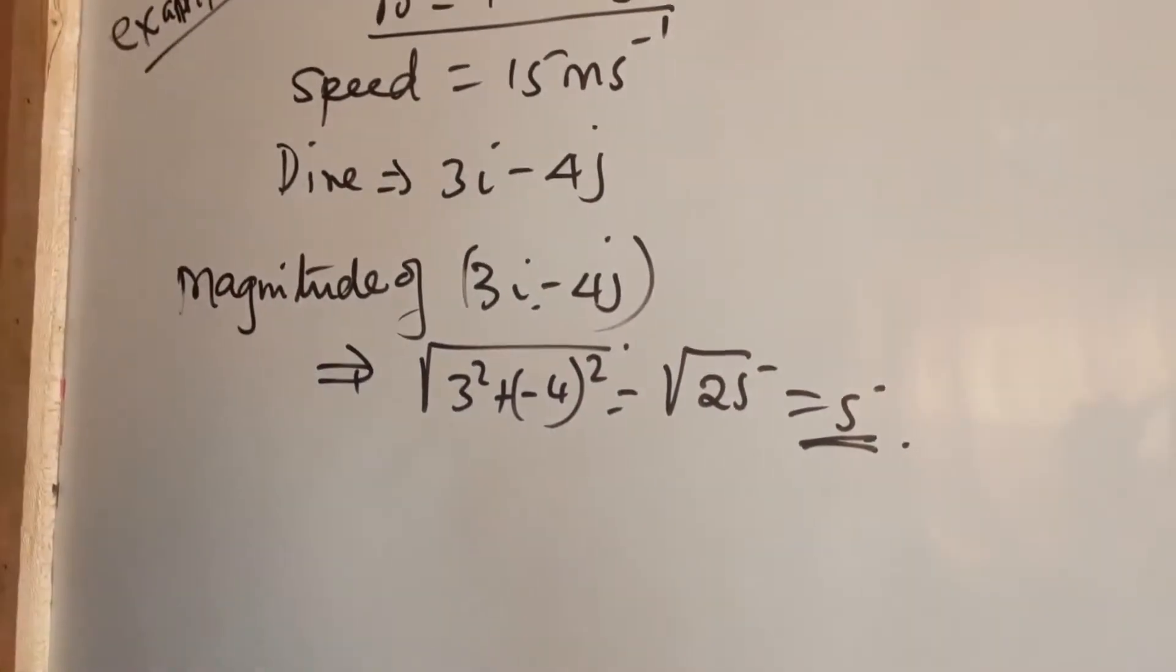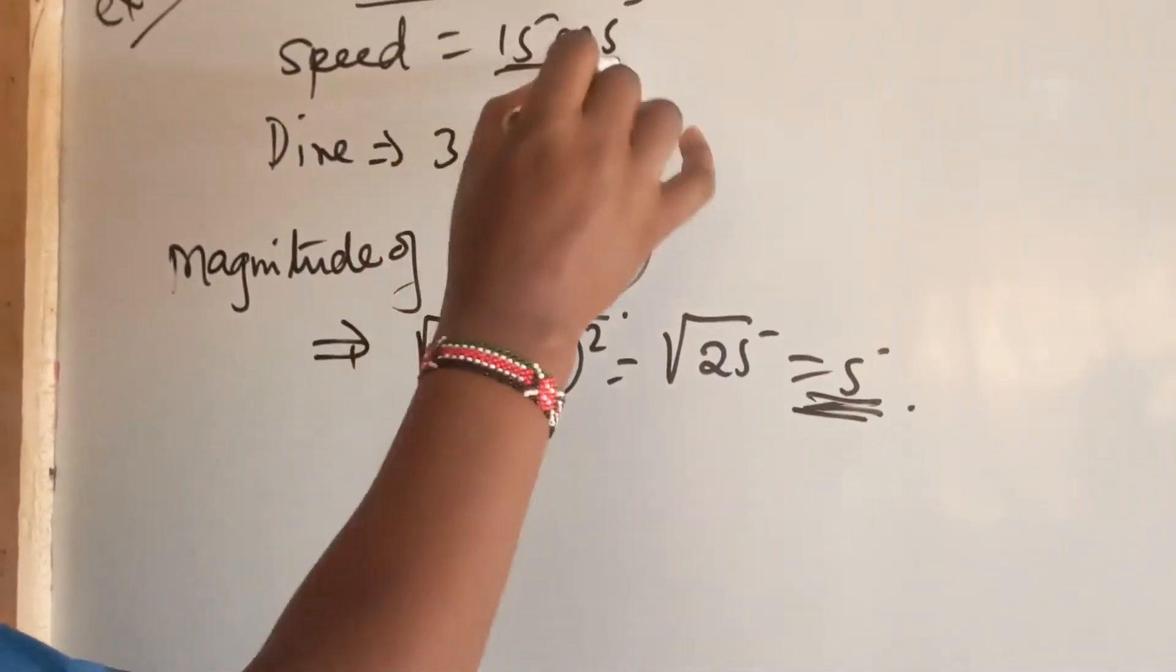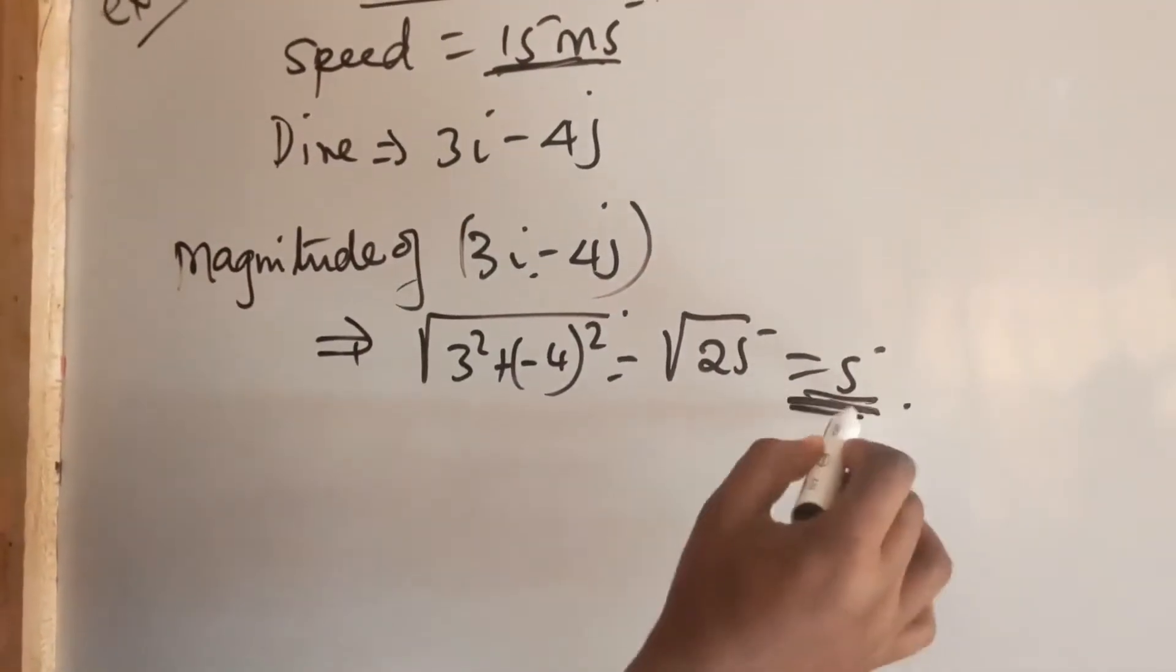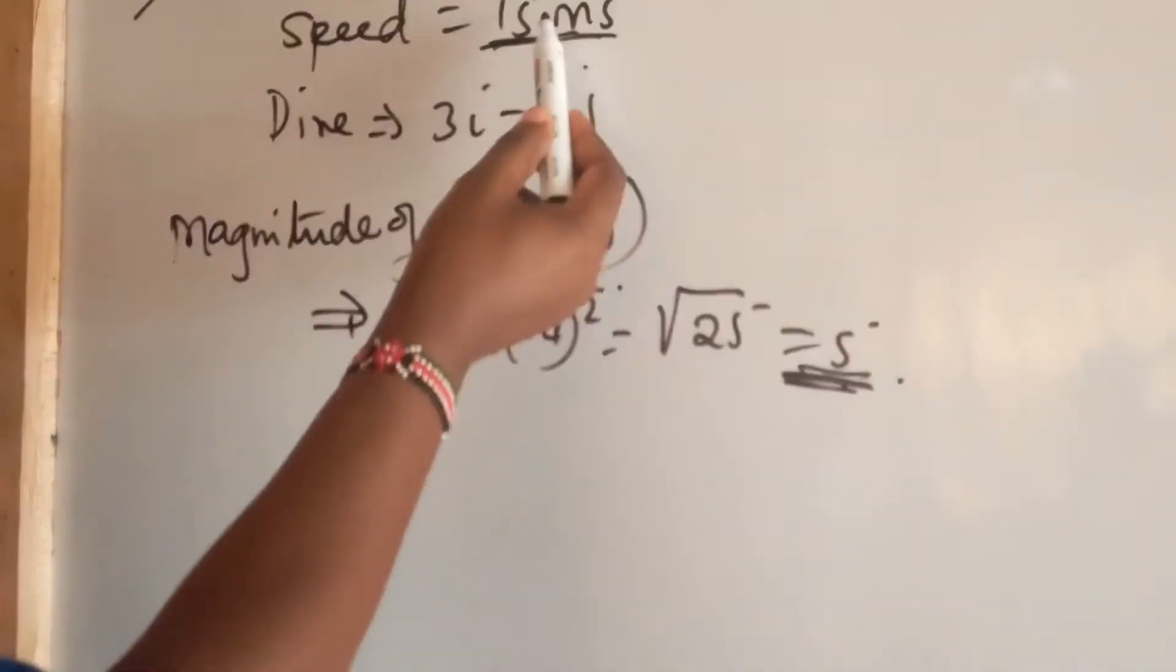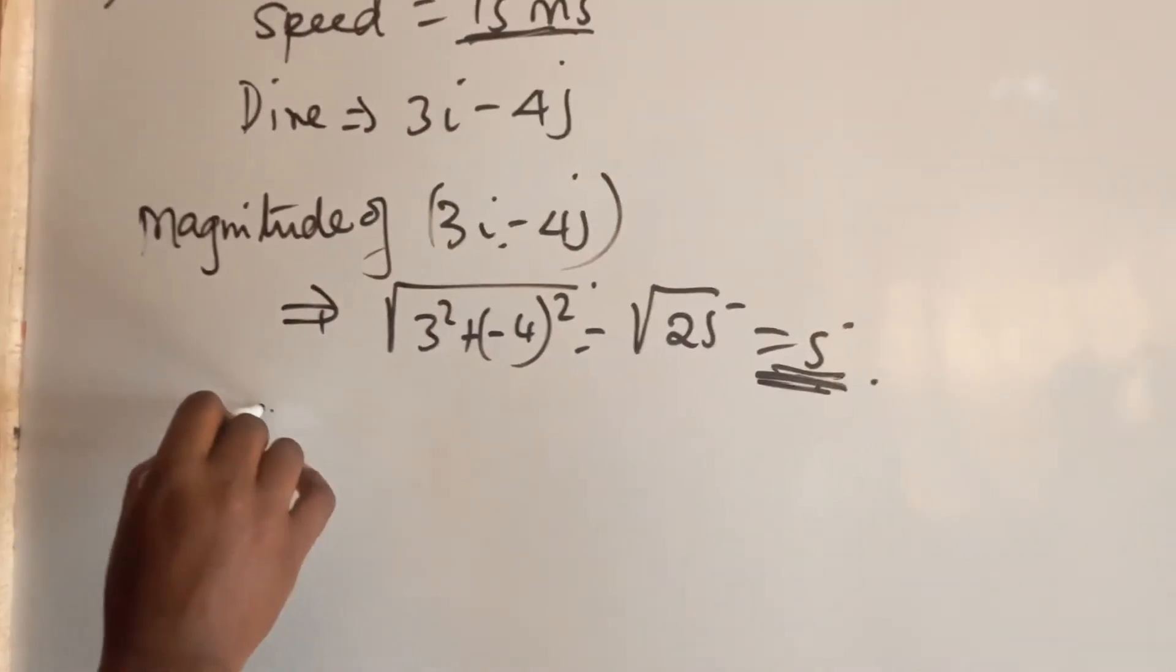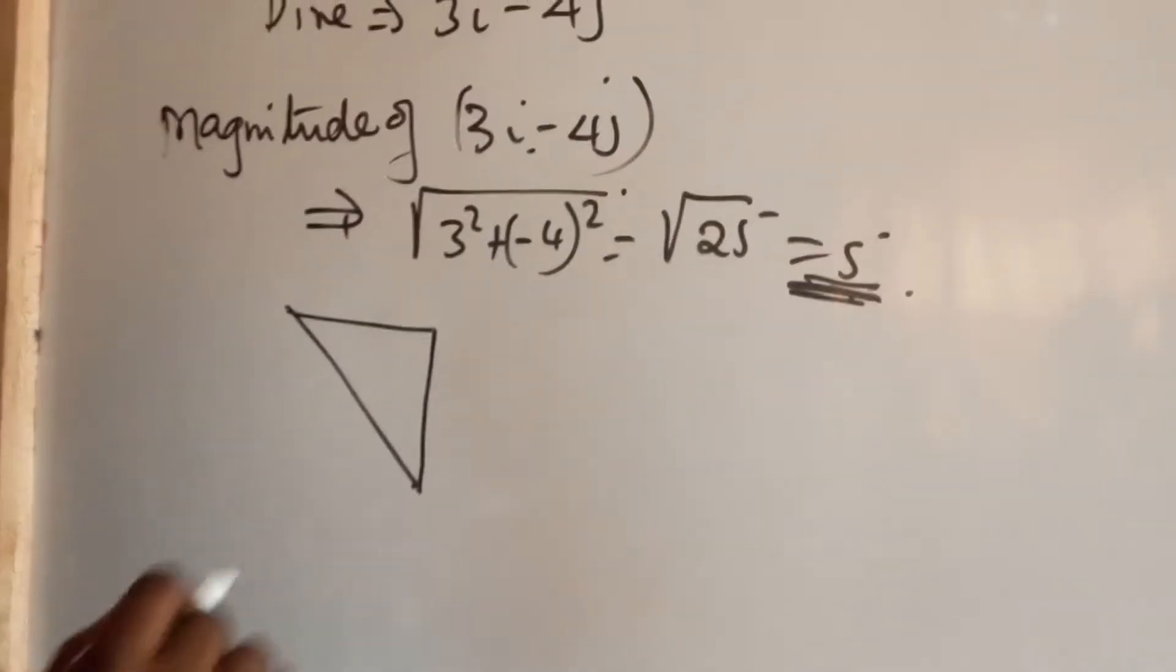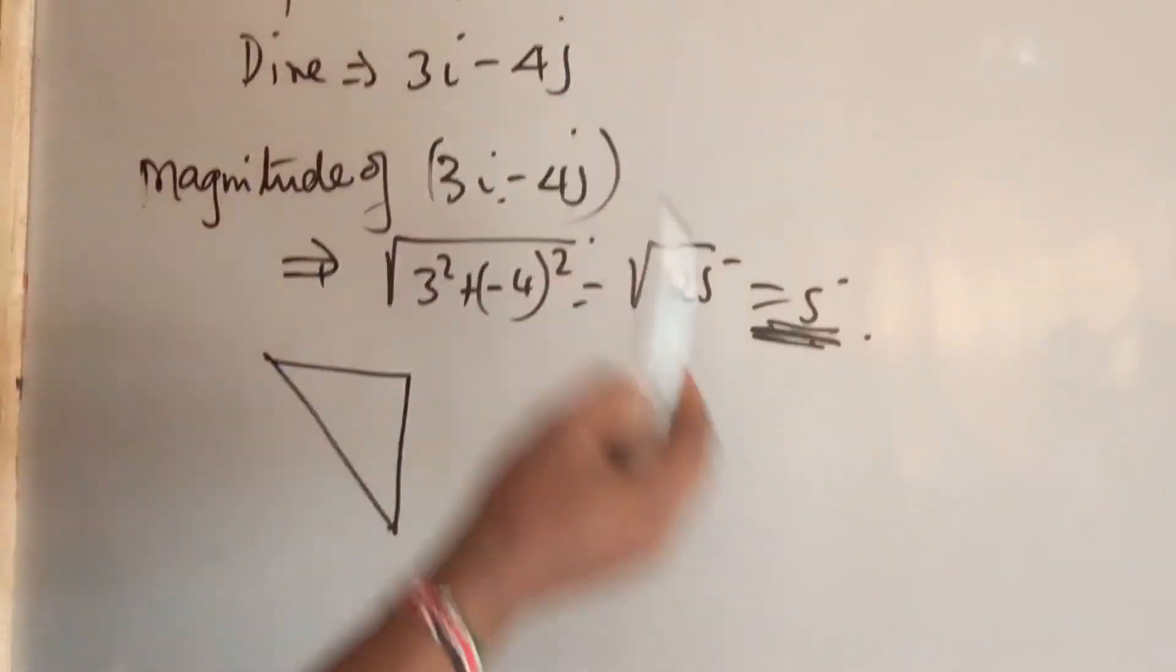This being the magnitude of the vector, which we can actually refer as the speed. You would wish to compare this speed and this speed and you realize that this is 3 times this. So definitely, when we are having 3i minus 4j, that's 5, and this being 3 times this.